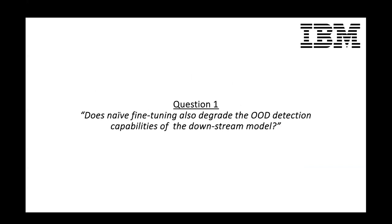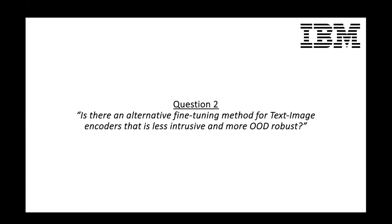There are a lot of questions that arose as a consequence of that work. One of the big questions we want to answer is: how far does this degradation extend? Percy's work showed it extends to covariance shifts — we want to see if it also extends to semantic shifts. Does the degradation degrade everything that's not in distribution? We also wanted to see if there are alternative fine-tuning techniques that are less intrusive and may show similar robustness benefits.